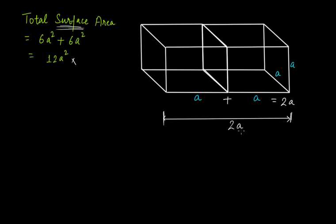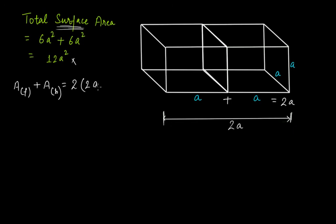The total surface area of this joined cuboid: the front face and back face are identical, so their combined area is 2 × (2a × a) = 2 × 2a² = 4a². The top and bottom surfaces are also identical: 2 × (2a × a) = 4a².